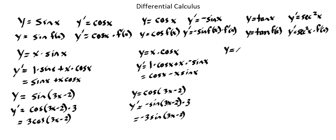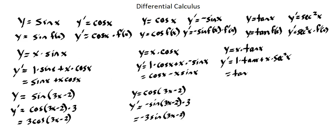For the tangent function we'll work with similar examples. Y equals x times tangent x — we'll apply the product rule. The derivative of y equals the derivative of x, which is 1, times tangent x, plus x times the derivative of tangent x, which is secant squared x. This simplifies to tangent x plus x times secant squared x.